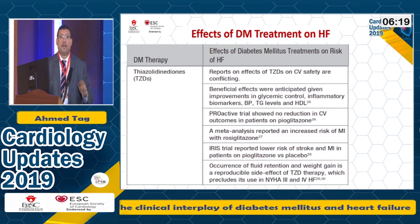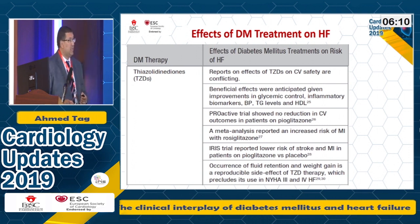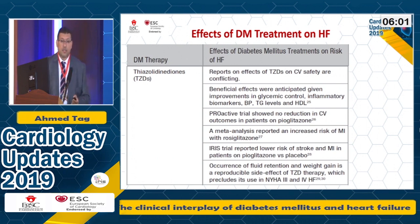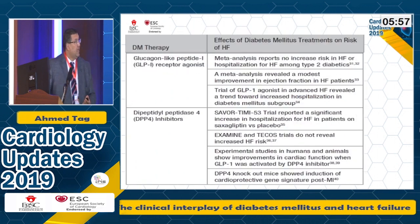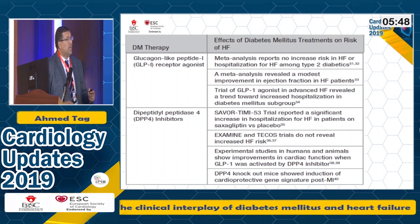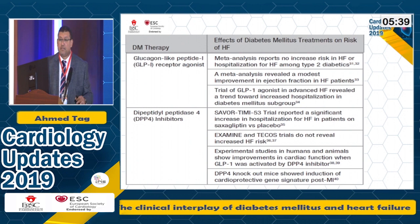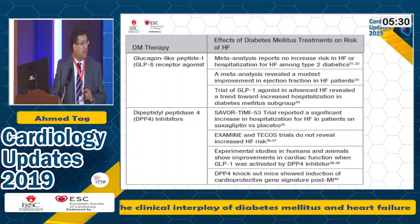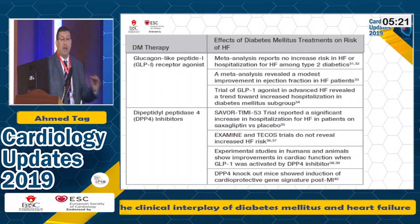Thiazolidinediones are clearly contraindicated in patients with heart failure because of sodium and water retention. Reports on their cardiac safety are conflicting, but the negative impact outweighs the positive, and they should not be used in heart failure. GLP-1 receptor agonists — meta-analyses report no increased risk of heart failure hospitalization, and one meta-analysis reported modest improvement in heart failure status, so at least they are neutral and safe. For DPP-4 inhibitors, saxagliptin proved increased hospitalization and negative cardiovascular outcomes in diabetes, while other DPP-4 inhibitors are to some extent neutral or safe in heart failure.